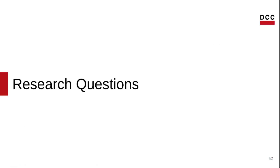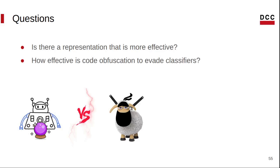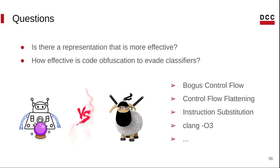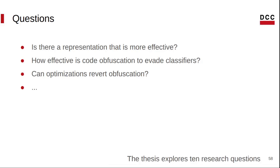We now understand the importance of algorithm classification and what obfuscation techniques and program representations are. Let us explore some research questions related to these concepts. There are many ways to convert a program to a vector of numbers to classify it — is there a representation that is more effective? How effective are code obfuscations at evading predictors? And can optimizations revert obfuscations? Some obfuscation techniques are very naive — are there robust obfuscation techniques? In total, our work explores 10 such research questions.